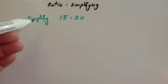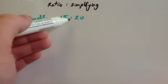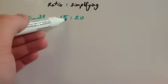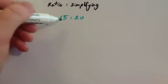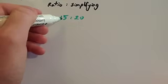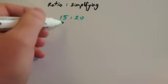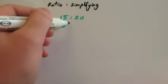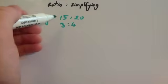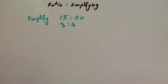Let's take a look at simplifying 15 to 20. Remember this little dot dot means to, so 15 to 20. You can divide both of these by 5. So 5 goes into - you can divide 15 by 5 and you get 3, and you divide 20 by 5 and you get 4. So 15 to 20 is the same as 3 to 4.